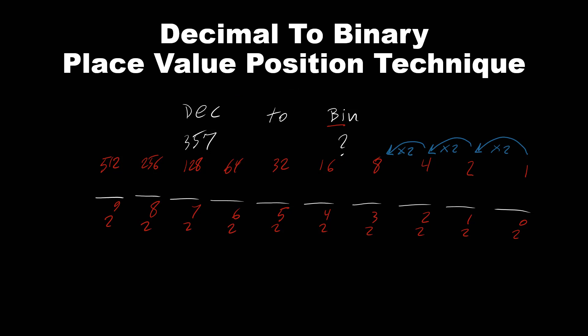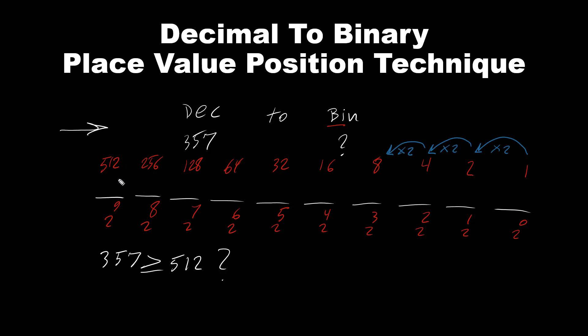What do we have to do next? We have to go left to right and see if 357 is greater than or equal to each decimal value. So, is 357 greater than or equal to 512? If it is, we put a 1. But it is not — 357 is less than 512. So if we subtract 357 minus 512, we get a negative value. Anytime we get a negative value, we just put 0. So this one is off.